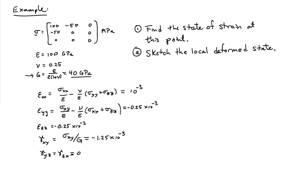To calculate the strains is straightforward. We use the three-dimensional Hooke's law and plug in the values for sigma as given in the matrix. We find there's a normal strain of 10 to the minus 3 in the x direction, a normal strain in the y direction of minus a quarter times 10 to the minus 3, and likewise the normal strain in the z direction is the same. There's a shear in the x-y plane of minus 1.25 times 10 to the minus 3, and the shear strains in the other two planes are equal to zero.